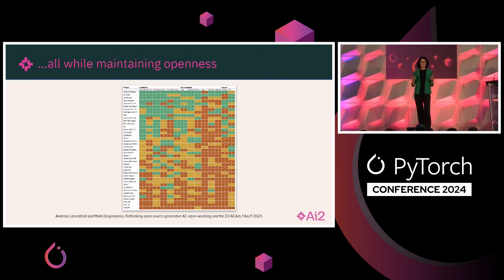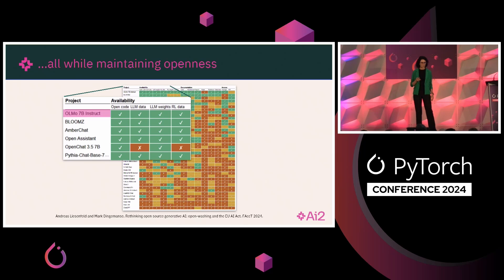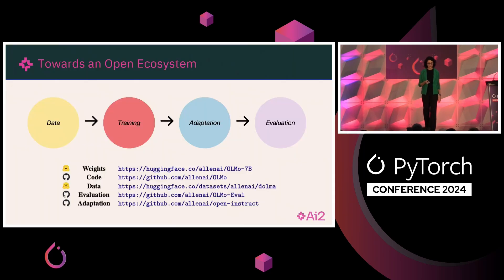We did all this work and research while maintaining openness. Some external groups started ranking and assigning openness measures to different models, and our OLMo 7B model is open across all those different metrics they were checking. With that, I want to thank our partners — we had a lot of partners, particularly for compute — and I would encourage all of you to check out our GitHub and HuggingFace repositories and contribute to that. Thank you.